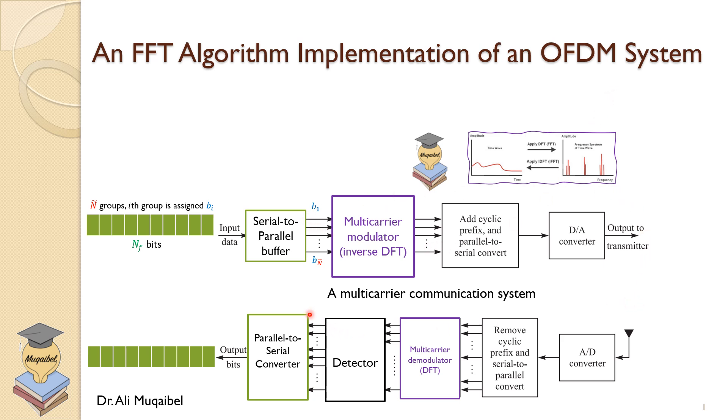The following block diagram shows you the stages of the implementation. First, the incoming data—N_F bits, which is the number of bits in the sequence—is going to be divided into N-tilde groups. Every group will have a certain number of bits.